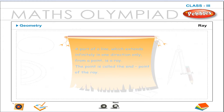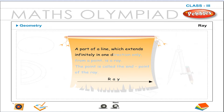Ray. A part of a line which extends infinitely in one direction only from a point is a ray. That point is called the end point of the ray.